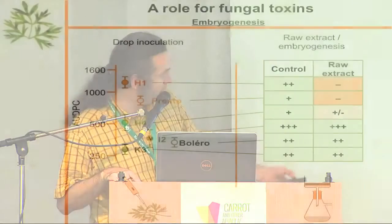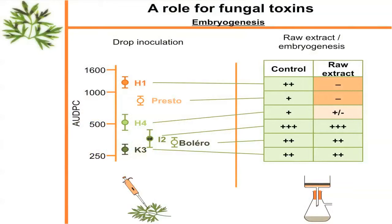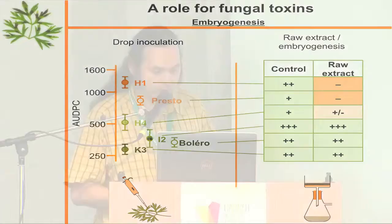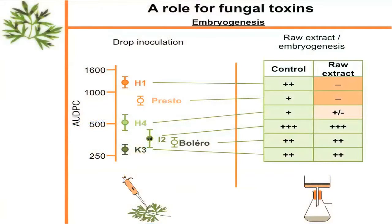We selected several plant lines: the well-known cultivar Presto, which is rather susceptible, and Bolivar, which is resistant. We also have H1 (very susceptible), K3 (very resistant), I2 (rather resistant), and H4 (intermediate). When fungal extract is added, the two susceptible cultivars stop growing, while the three resistant cultivars continue to grow and produce embryos rapidly. H4, which is intermediate, sometimes makes embryos and sometimes doesn't — it's right in the middle, which is exactly what we'd expect.